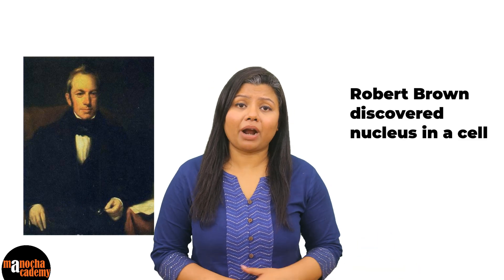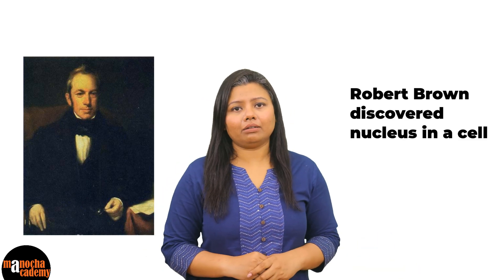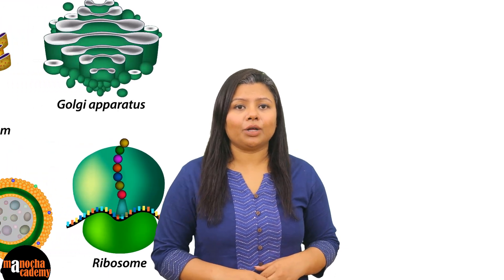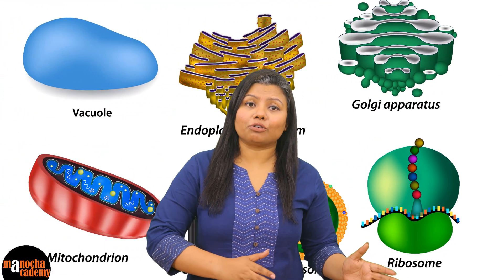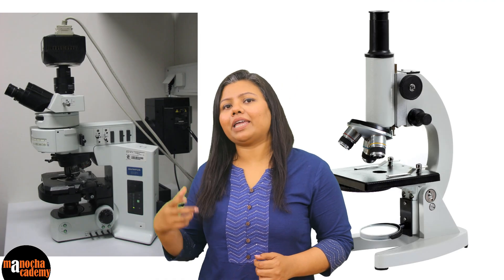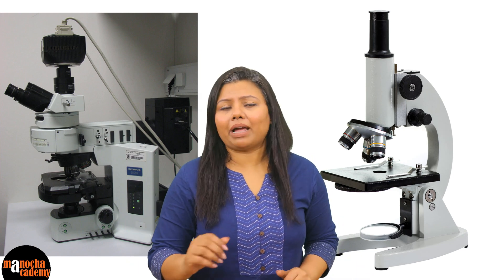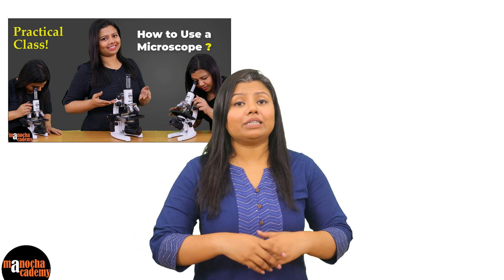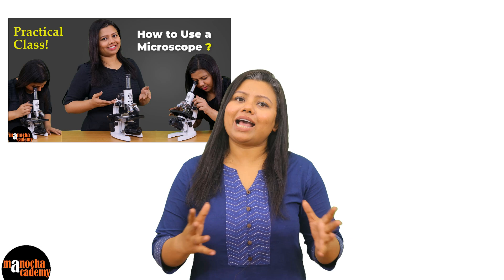Later, Robert Brown discovered the nucleus inside the cell. Purkinje coined the term protoplasm, and different cell organelles were discovered with the advancement from the light microscope to the electron microscope. To observe a cell, we need a magnifying apparatus known as a microscope. You can check out our video on parts of a microscope where a detailed structure of a compound microscope has been discussed.